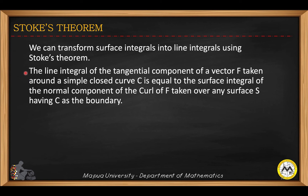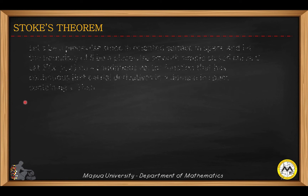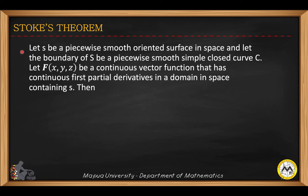The line integral of the tangential component of a vector F, taken around a simple closed curve, is equal to the surface integral of the normal component of the curl of F, taken over any surface S having C as the boundary. Let S be a piecewise smooth orientable surface in space, and let the boundary of S be a piecewise smooth simple curve C. Also let F be a continuous vector function that has continuous partial derivatives in a domain in space containing S.